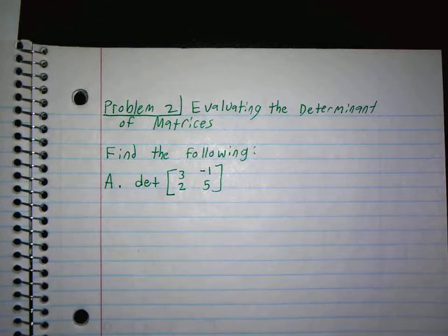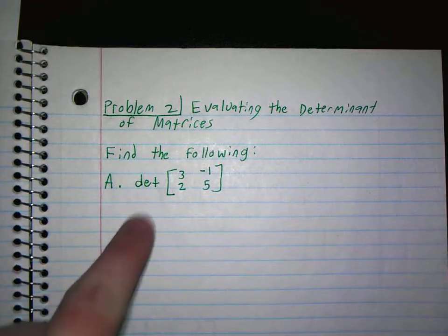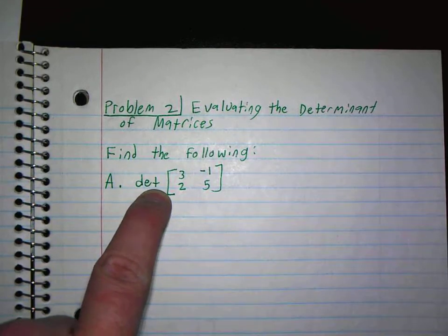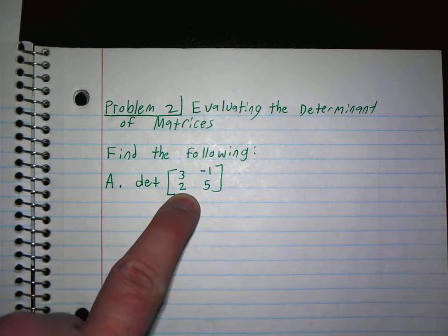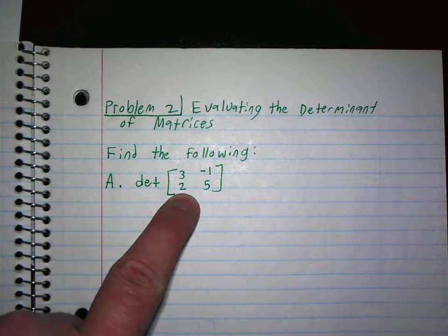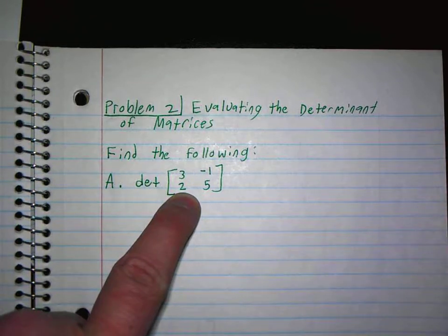Problem 2 is evaluating the determinant of matrices. They want us to find the following. DET stands for determinant, and they want us to find the determinant of 3, negative 1, 2, and 5.